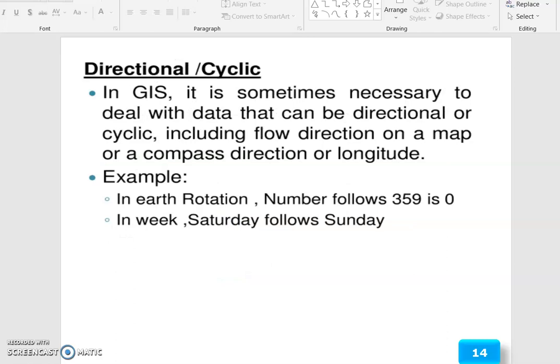Then directional and cyclic based. In GIS, it is sometimes necessary to deal with data that can be directional or cyclic, including flow direction on a map or a compass direction or longitude. See the example in earth rotation. Numbers following 359 is 0. In a week, Saturday follows Sunday.